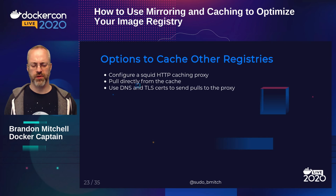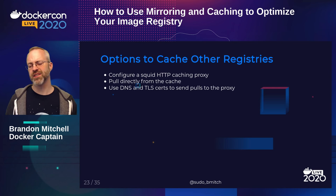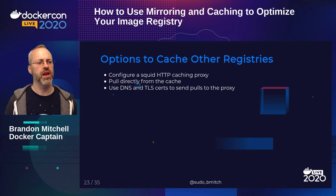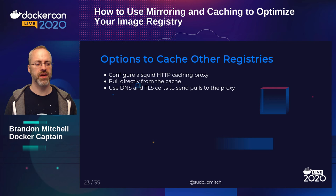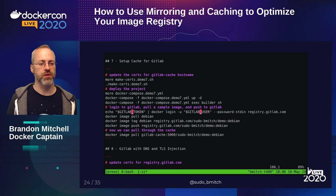For workarounds to the Docker-Hub-only limitation: you could set up a Squid proxy completely outside Docker to proxy all HTTP traffic. You could also pull directly from the cache by changing the registry name in your image reference, as we saw in the demo. There's also a DNS and TLS certificate trick you can find in my GitHub repo's extended version — where one container thinks it's talking to the external registry directly.